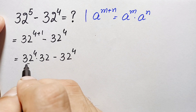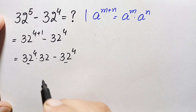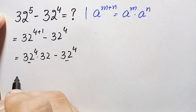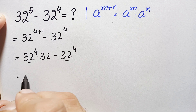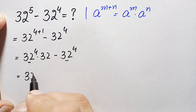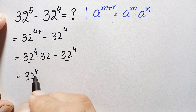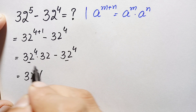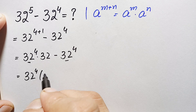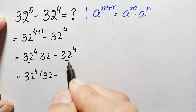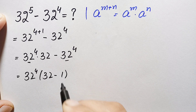Now 32 raised to power 4 is common in both terms, so we take it out. This becomes 32 raised to power 4 times the quantity 32 minus 1.